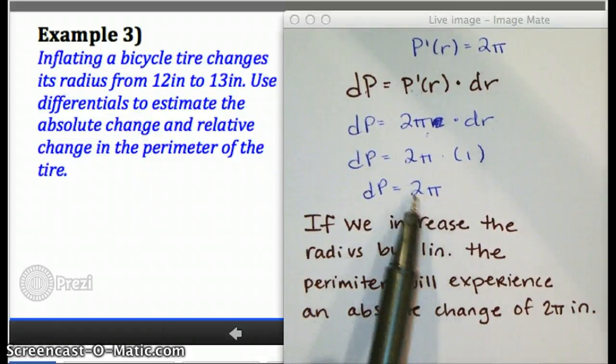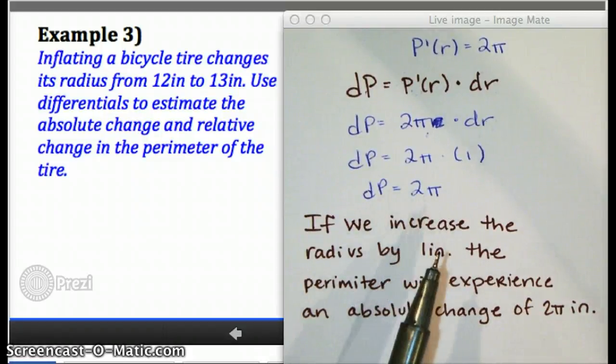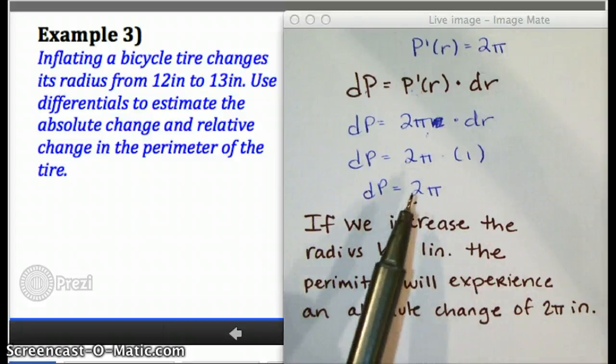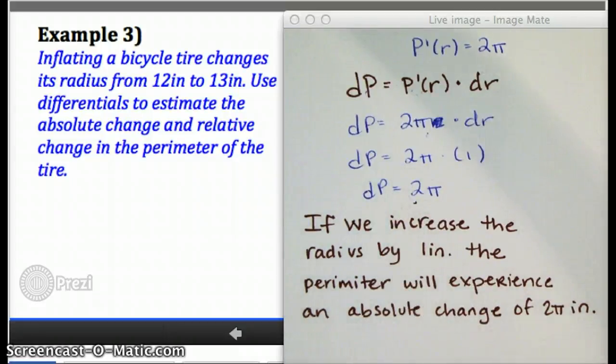Right, this is actually the number for how much the perimeter increases. If we want to find the relative change, which we're about to do, we would take this number and we would divide it by what?